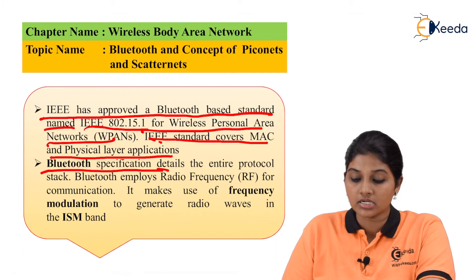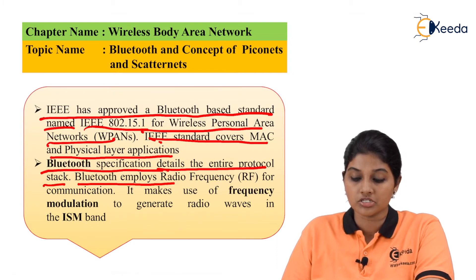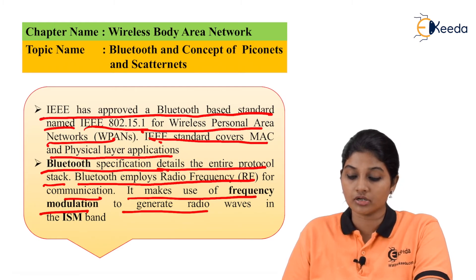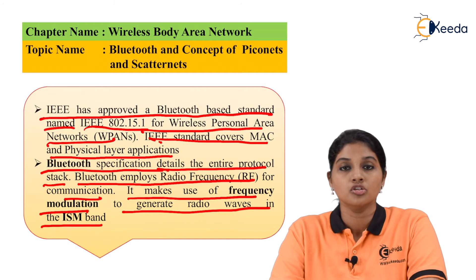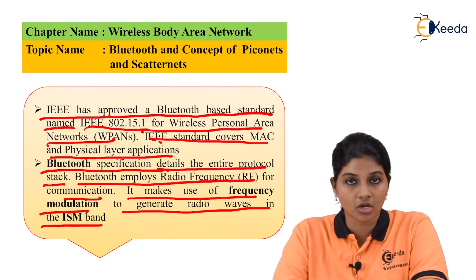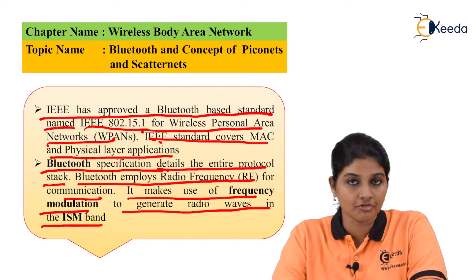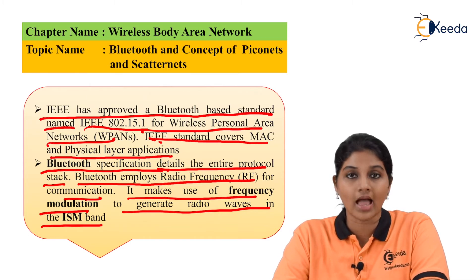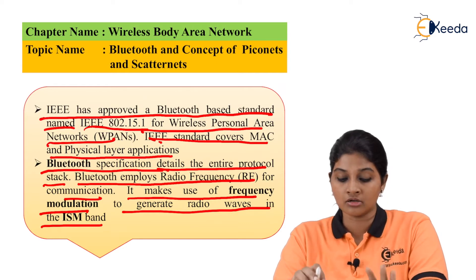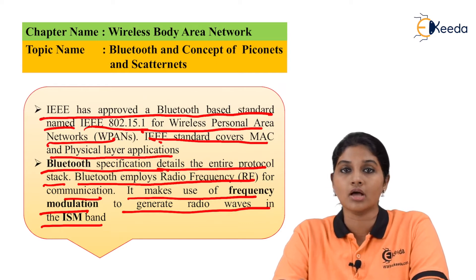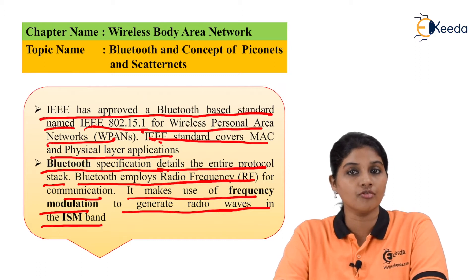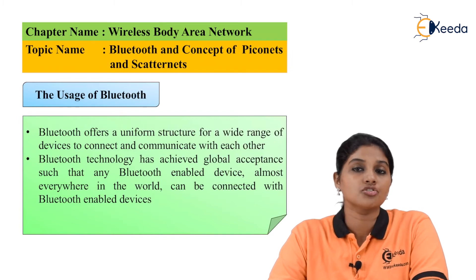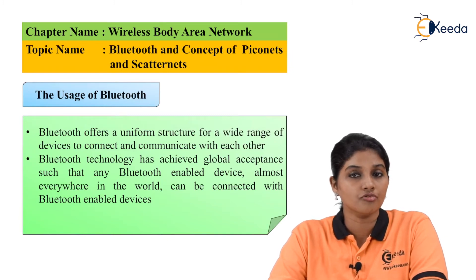The Bluetooth specification details the entire protocol stack. Bluetooth employs radio frequency for communication and makes use of frequency modulation to generate radio waves in the ISM band, which has a frequency range of 2.4 GHz. Now let's look at the usage of Bluetooth — the applications where we can use Bluetooth technology for communication.